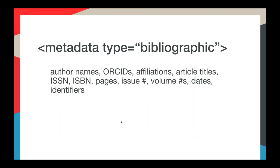When you register your content with us, you create a metadata record for that content. That record, as with most metadata, describes the content in detail. The level of detail you supply to us is up to you, but a record sent to CrossRef must contain bibliographic metadata such as author names, ORCIDs, affiliations, article title, ISSN, ISBN, pages, issue numbers, volume numbers, internal identifiers, publication dates, and of course a CrossRef identifier — we use the DOI as an identifier.